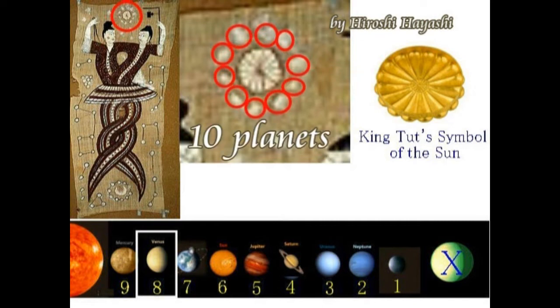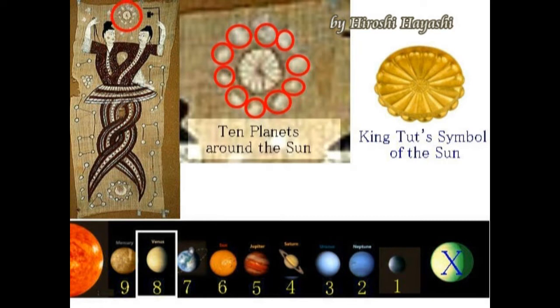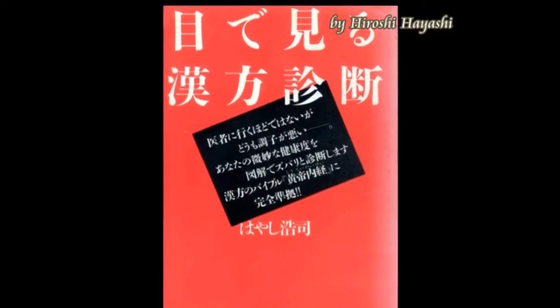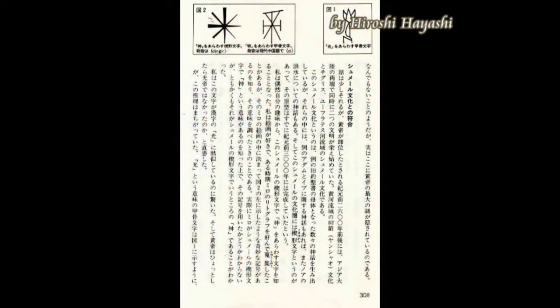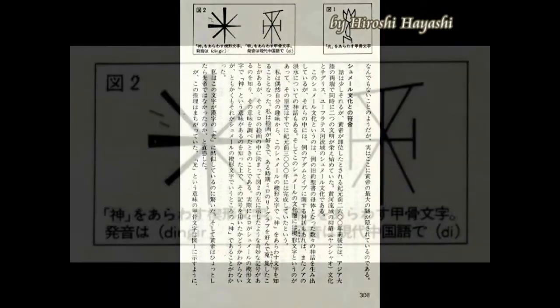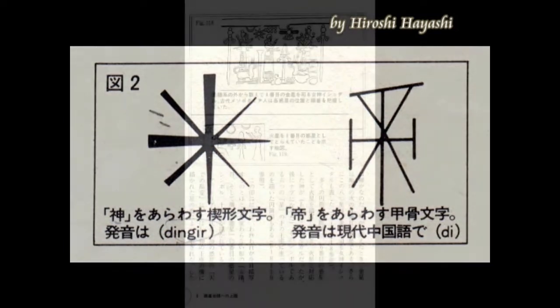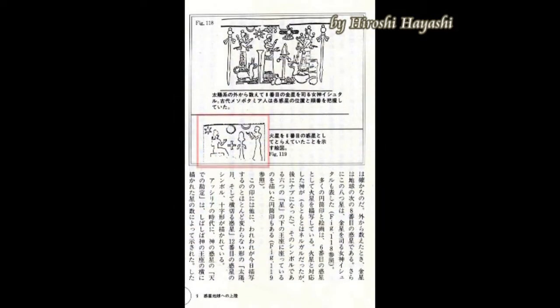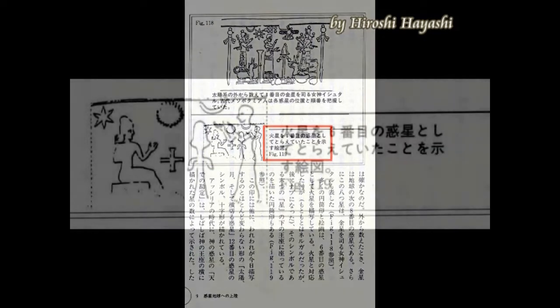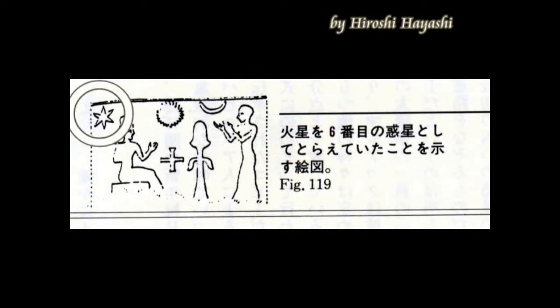ツタンカーメンの墓の中から見つかった文章があります。中央にあるのは太陽です。その周りにも、やはり十個の惑星が描かれています。古代の神々、すなわちエイリアンにとって、十個の惑星というのは常識であったと考えるのが自然ではないかと思われます。神々はどこから来たのか。そのヒントとなったのが、くさび形文字と甲骨文字です。この両者を比べていただきますと、形が大変よく似ているのがわかります。意味も同じです。星から来た者、神ということになりますし、発音も、デンギルとディで、大変よく似ています。そして、ゼカリアシッチンの本の中に、左上に六方星が描かれています。